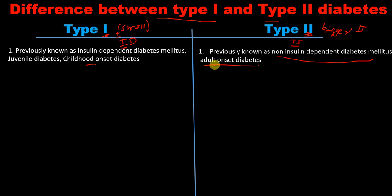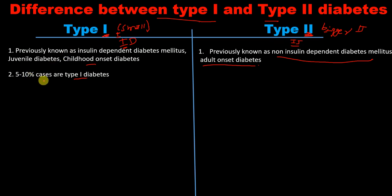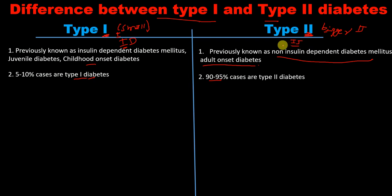Next difference: only 5 to 10% of cases are type 1 diabetes mellitus. Number 1 is smaller, so there are fewer cases. Whereas type 2 diabetes mellitus accounts for 90 to 95% of cases, which is much higher — consistent with type 2 being the bigger number.